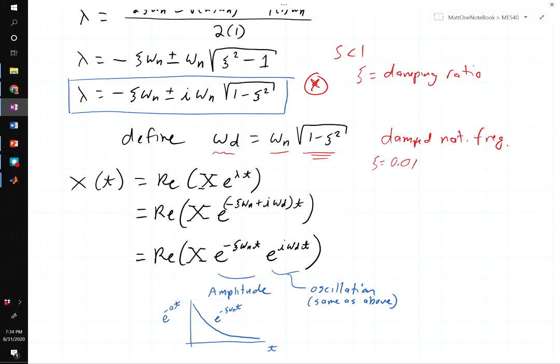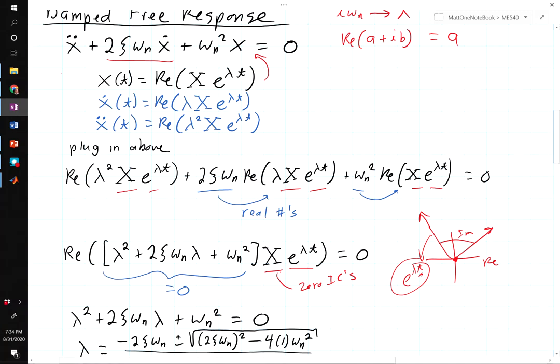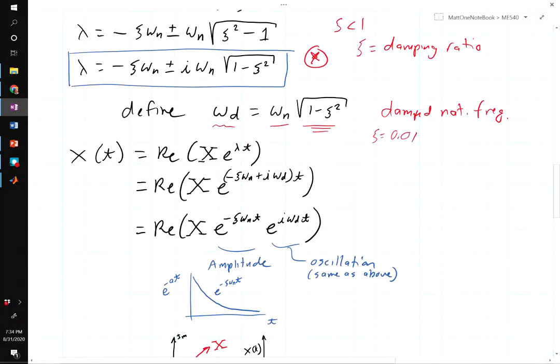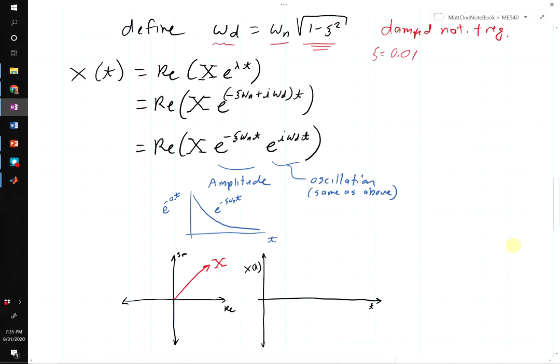This imaginary part is the part that we're going to oscillate at, so we give this a special name. We call it ωd. This is called the damped natural frequency. And it's very close to the natural frequency. It just has this little correction factor here. If ζ is typically say 0.01, that's practically one, just a slight decrease in the natural frequency. We see why these are important if we plug them back in to what we started with.